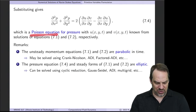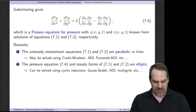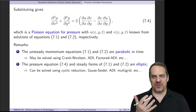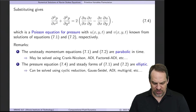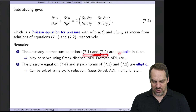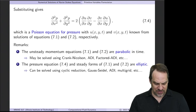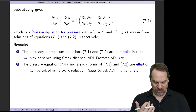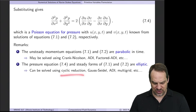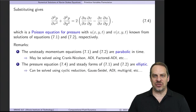This is a Poisson equation: a Laplacian on the left for the pressure, and a known right-hand side. If I know u and v, I can evaluate the right-hand side of equation 7.4, giving us a Poisson equation. We know how to solve Poisson equations — that's an elliptic PDE, it's linear, and we know the techniques. So in the end, equations 7.1 and 7.2 — the x and y momentum — are parabolic in time for the unsteady case; we could use Crank-Nicholson, ADI, or factored ADI. And the pressure Poisson equation is an elliptic equation that we solve using any of our elliptic solvers: cyclic reduction, Gauss-Seidel, ADI multigrid, and so forth from Chapter 5.